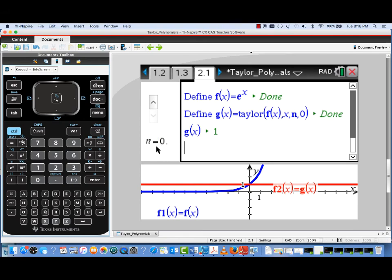Right now the degree is set at N equals zero, and as you can see, our red graph is that of a constant function. It matches the value of e to the X at X equals zero, so it's just the constant function one.